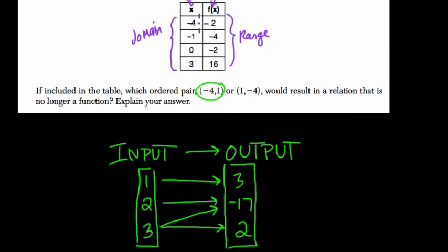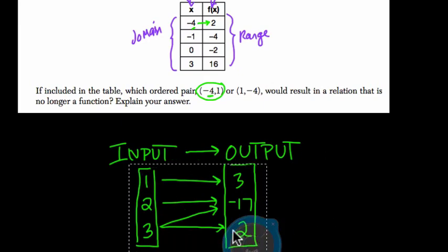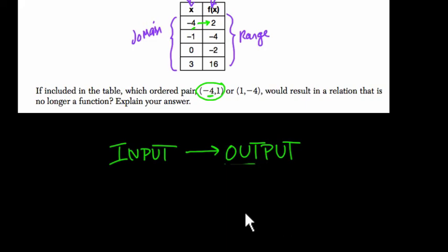Because negative 4 is already mapping to 2, so if negative 4 also maps to 1, that input, negative 4 is our input, has two outputs, both 2 and 1. So the way I would explain this, I would say, I would write down that negative 4 has two outputs, 2 and 1. So therefore, it's not a function.